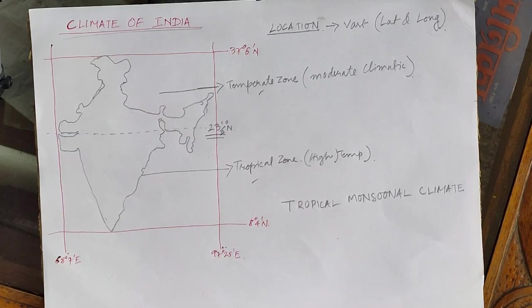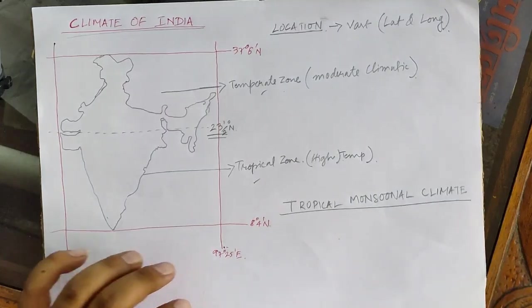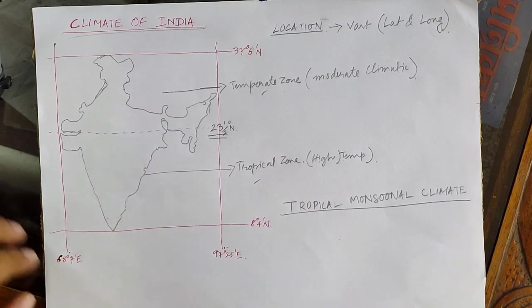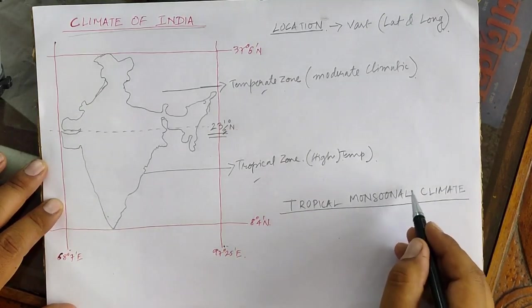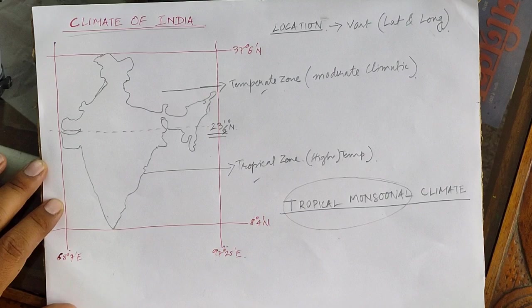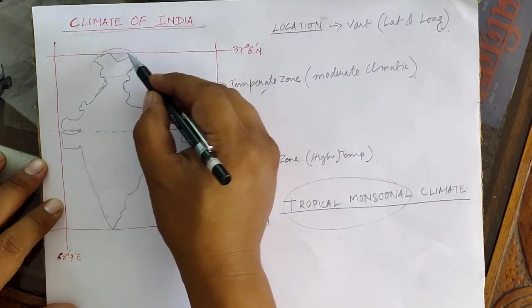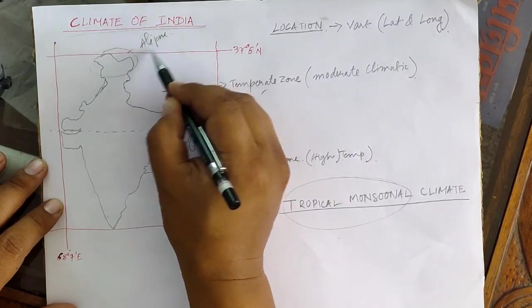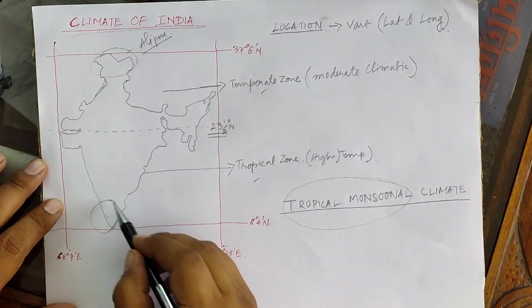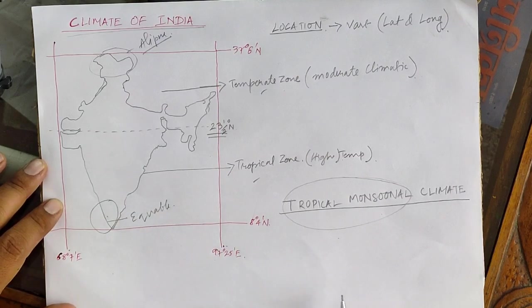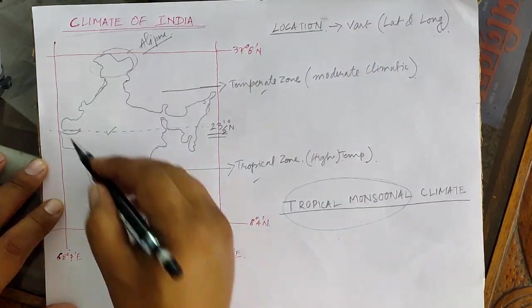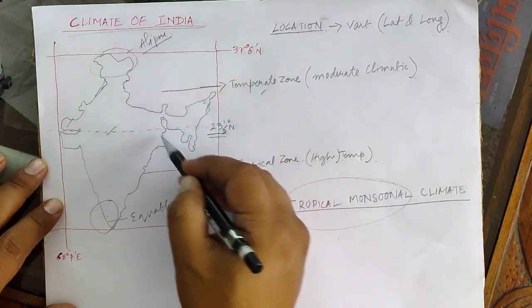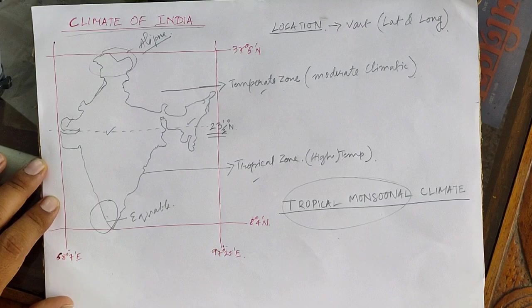As stated earlier, there are various types of climatic conditions in our country — north is different, south is different, and the center is different. The overall climatic condition is tropical monsoonal, due to the domination of high temperature and monsoonal activity. In the northern part we have an alpine type of climate; in the south, like in Kerala, there is an equable type; in the center we have a continental type; and on the eastern part we have monsoonal or desert type of climatic conditions.